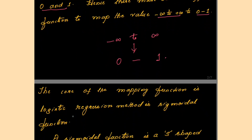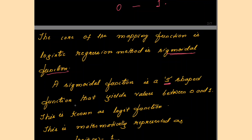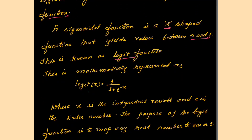The core mapping function in logistic regression is called the sigmoidal function. A sigmoidal function is an S-shaped function that yields values between 0 and 1. This is known as the logit function. Mathematically, it is represented as: logit(x) = 1 / (1 + e^(−x)), where x is the independent variable and e is the Euler number. The purpose of the logit function is to map any real number to 0 or 1.